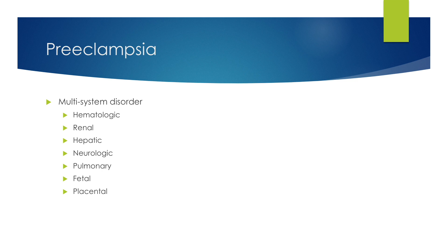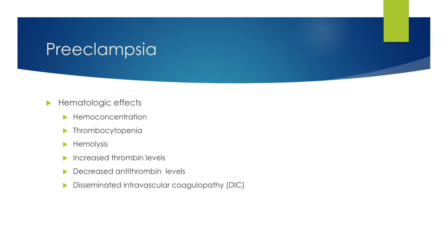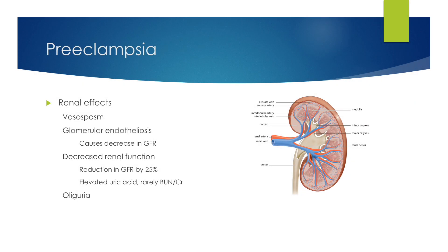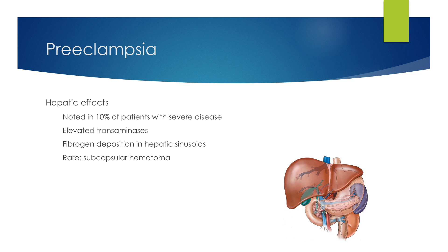It is important to note that preeclampsia is a multi-system disorder with hematologic, renal, hepatic, neurologic, pulmonary, fetal, and placental units all being involved. The hematologic effects include hemoconcentration, thrombocytopenia, hemolysis, increased thrombin levels, decreased antithrombin levels, and disseminated intravascular coagulopathy. The renal effects include vasospasm and glomerular endotheliosis, causing a decrease in GFR by 25%, elevated uric acid, but rarely an increase in BUN or creatinine until severe. Oliguria is also uncommon but can occur in severe preeclampsia. Hepatic effects are noted in approximately 10% of patients with severe preeclampsia, showing elevated transaminases, fibrinogen deposition in hepatic sinusoids, and rarely a subcapsular hematoma.